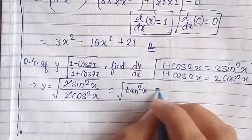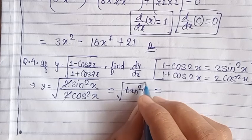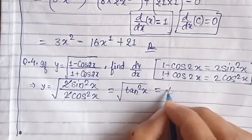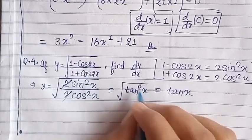So what do you do? Tan squared x, you cancel this root. Then what do you get? Tan will get, square root cancels.